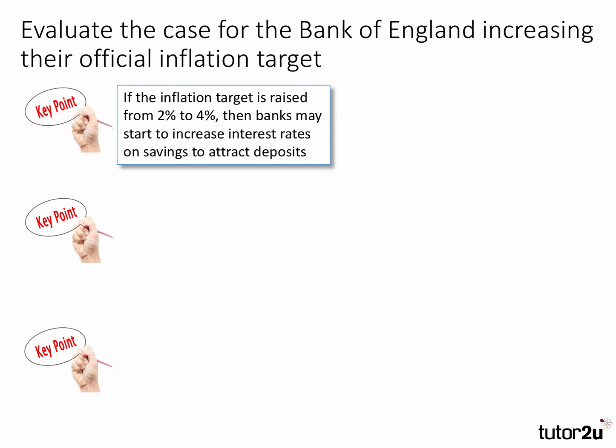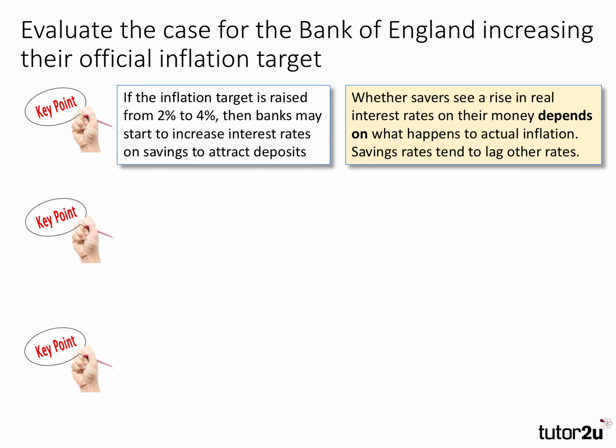First key point: if the inflation target is raised from let's say 2% to 4%, then commercial banks may start to increase the interest rates on savings to attract deposits. Counter-argument, or an evaluation argument, is that whether savings actually see an increase in real interest rates depends on what actually happens to inflation, and savings interest rates tend to lag other interest rates. So an increase in inflation target wouldn't necessarily automatically benefit savers in real terms.